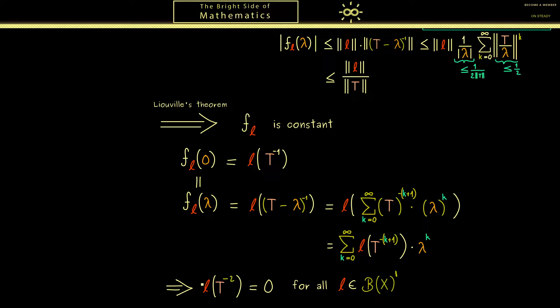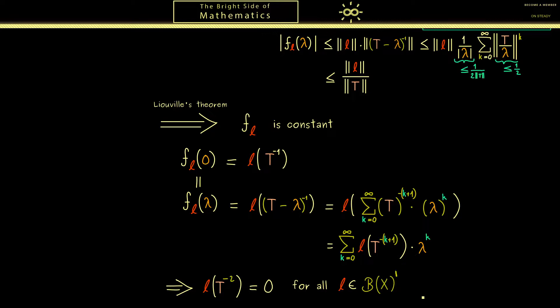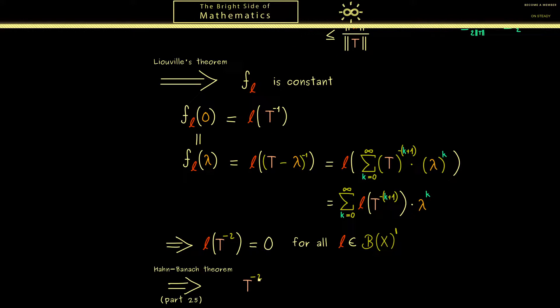And now every time you see something like this you should immediately think of the Hahn-Banach theorem. And in the case you don't remember it, look at part 25 again. It tells us that if we put in the same point into all functionals and the result is always 0, then the point has to be 0 as well. So for us this means this operator is the 0 operator. However it's an inverse, therefore this shouldn't happen at all. The only case where this strange thing can happen is if we start with the trivial vector space. And usually we don't do that. Therefore the result is that in all other interesting cases, especially for infinite dimensional vector spaces, the spectrum of an operator is never empty.